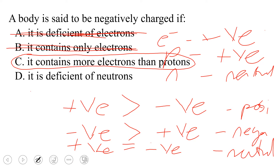And finally, option D: it is deficient of neutrons. Excess or deficiency of neutrons makes no effect on the net charge of an atom or of a body, because neutrons have no charge — neutrons are neutral. So a body cannot be said to be negatively charged because of excess or deficiency of neutrons. So option C takes it.